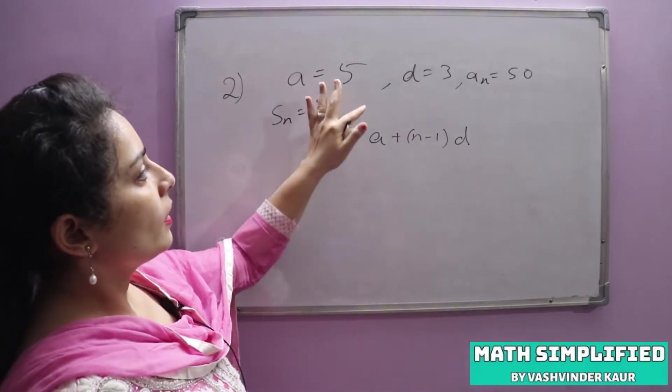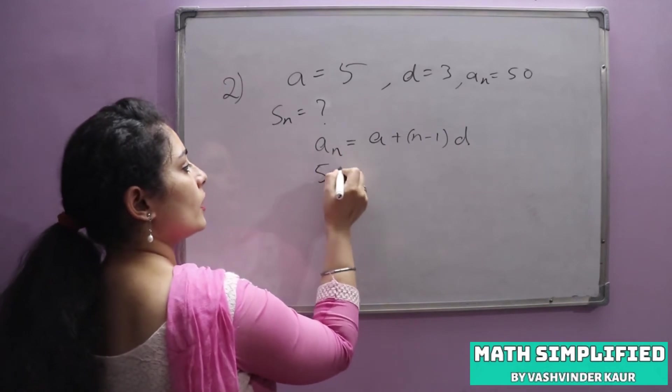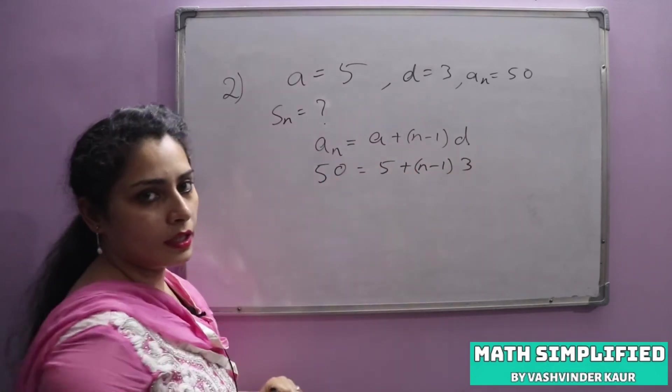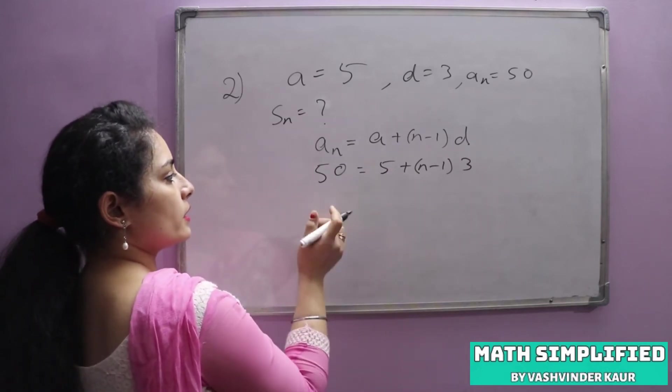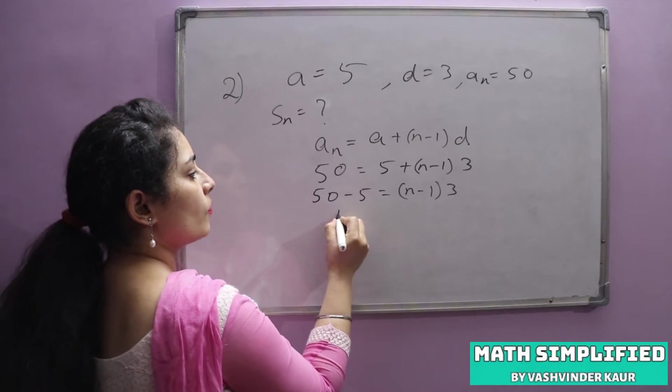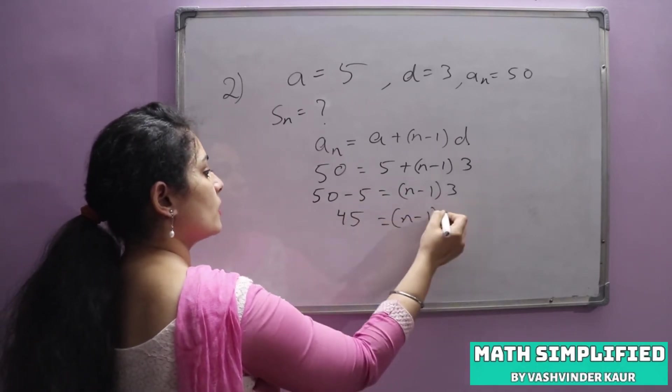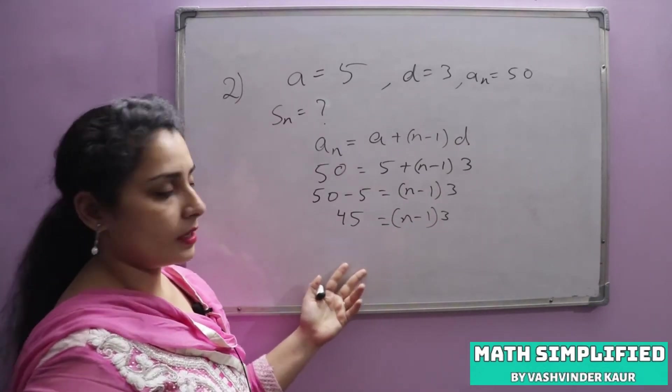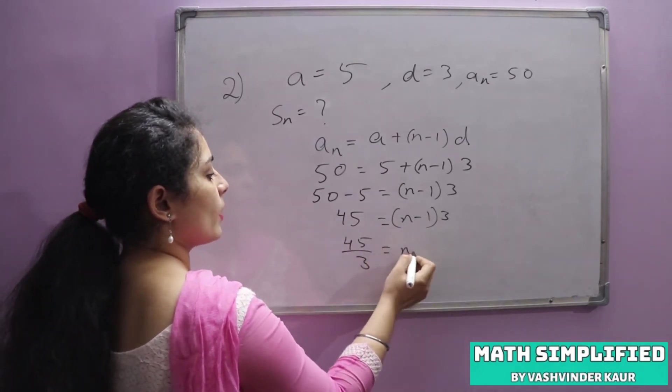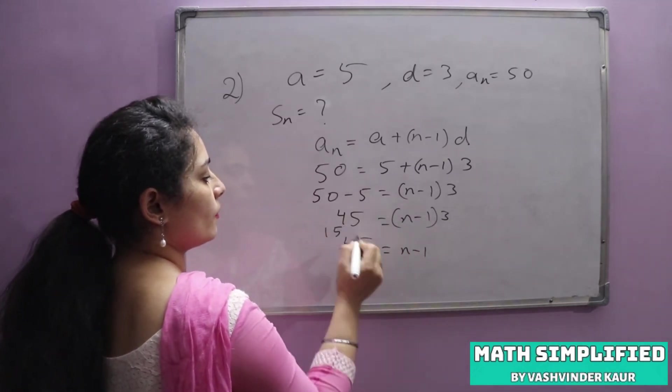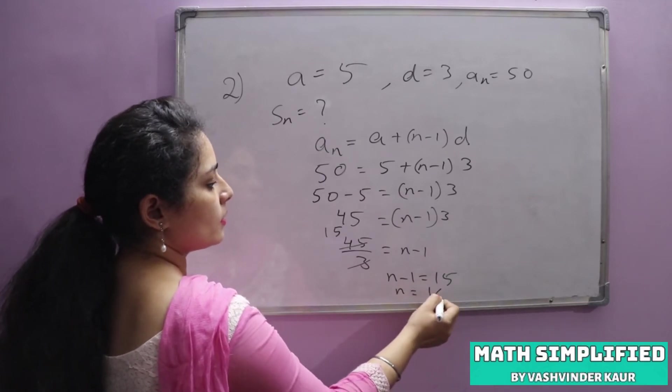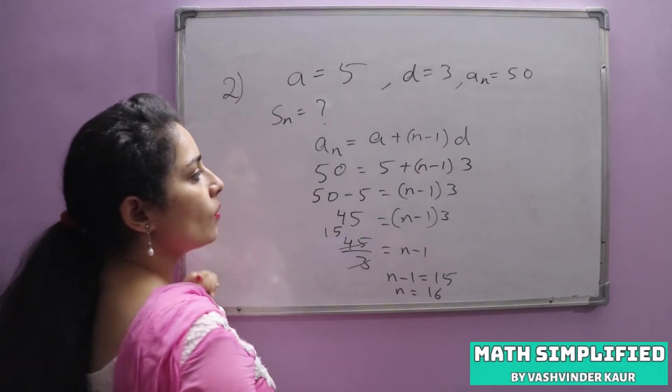So an is 50, a is 5, n minus 1 and d is 3. We will solve it. 50 minus 5, n minus 1 into 3. It becomes 45. This 3 is divided, then n value is 45 upon 3 equals n minus 1. We get 15 equals n minus 1, and n is equal to 15 plus 1 is 16.